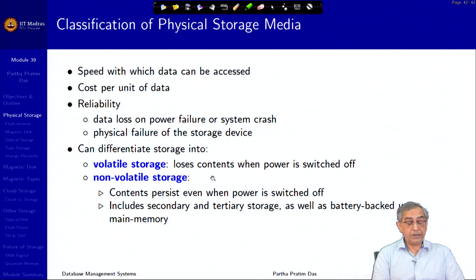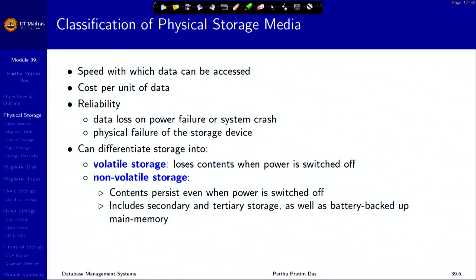The primary factors to consider for physical storage media are: first, speed — how quickly data can be accessed, because if it is slow the whole database operation slows down. Second is cost per unit of data — per byte, per megabyte, or per gigabyte — which must be as low as possible since we need very large data storage.